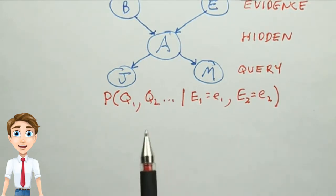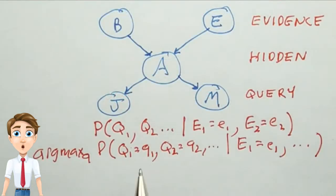There's another question we can ask, which is the most likely explanation. That is, out of all the possible values for all the query variables, which combination of values has the highest probability? We write the formula like this, asking which Q values are maxable given the evidence values.